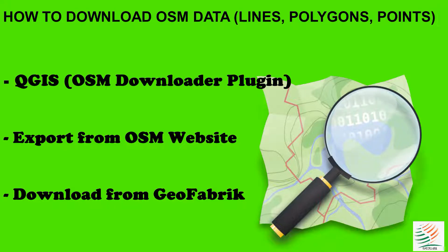Hello guys, welcome to Catalypse. Today I want to show you how to download OSM data using three different methods. The methods include: first, we're going to use QGIS to download OSM data. Then secondly, we're going to export OpenStreetMap data using the OpenStreetMap website. Then thirdly, we're going to use a website called Geofabrik, which is very good when you want to export data for a large area.